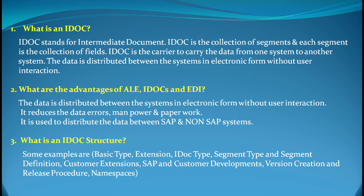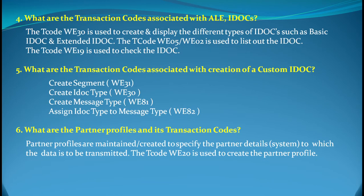The third question is: what is an IDoc structure? There's nothing like a rigid structure as such, but key components include basic type, extension IDoc type, segment type, segment definition, customer exits, SAP and customer development version creation, release procedure, and namespaces. These are all part of the IDoc structure. You can drill down on each of these terminologies for deeper understanding.